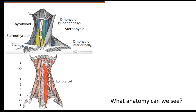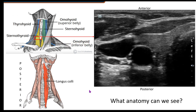I want to point out a posterior muscle that becomes a landmark for us when we're setting our depth to look at the thyroid gland — and that's going to be your longus colli. Longus colli just means long neck muscle, and it runs alongside the bodies of the vertebral bodies.